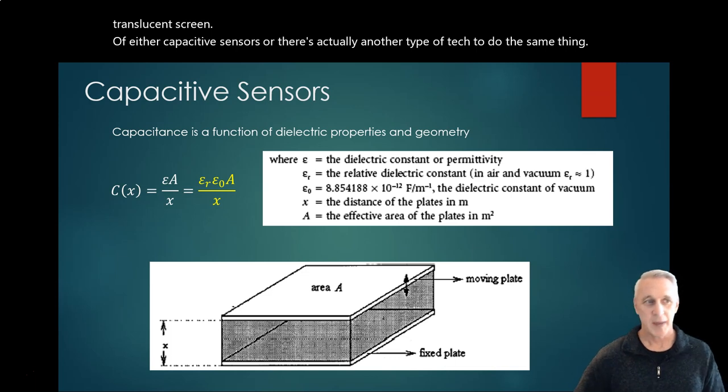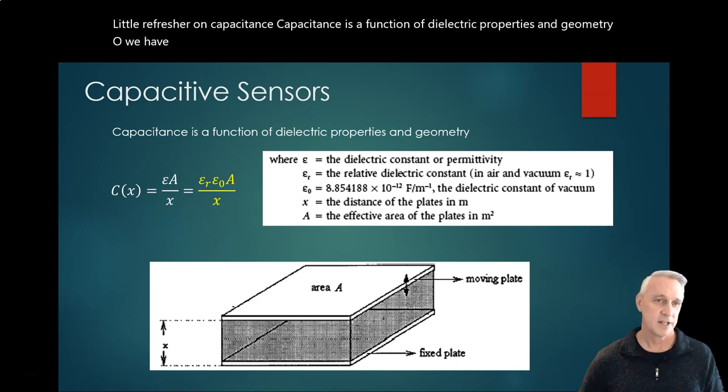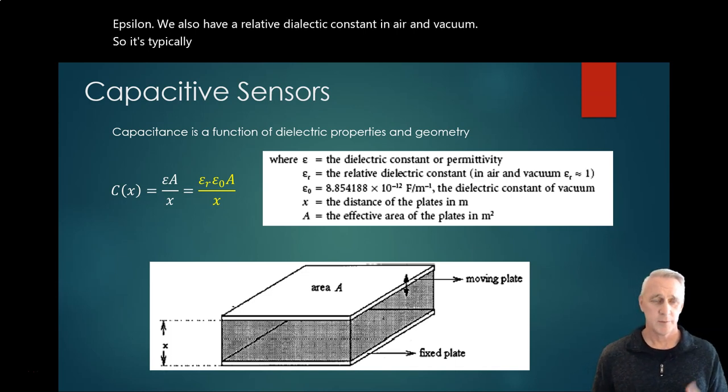A little refresher on capacitance. Capacitance is a function of dielectric properties and geometry. We have a dielectric constant or permittivity of a certain material, epsilon. We also have a relative dielectric constant in air, in a vacuum - it's typically one. Most things are air applications. Otherwise, when you get into different types of things, it becomes a little different.